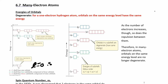For n equals 2, energy level 2, L can be 0 or 1. If L is 0, you have an s orbital. If L equals 1, you have a p orbital. And then if n equals 3, you can have an s, a p, or a d orbital.